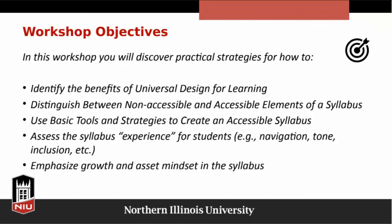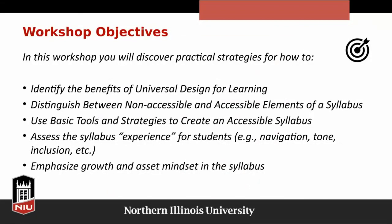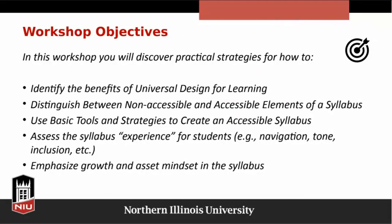So let's talk about our workshop objectives. In this workshop, we're going to talk about some practical strategies for how to identify the benefits of universal design for learning, to distinguish between non-accessible and accessible elements of the syllabus, to use basic tools and strategies to create an accessible syllabus, and assess the syllabus experience for students — for example, navigation, tone, inclusion — and then finally to emphasize growth and asset mindset in the syllabus.